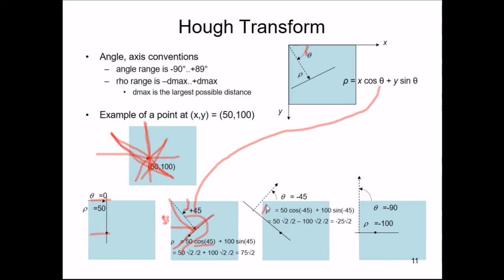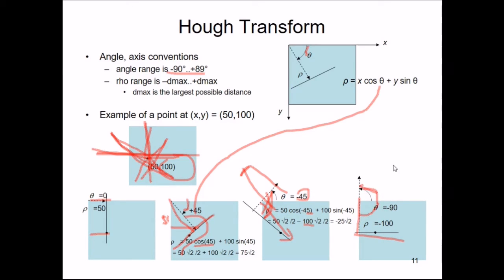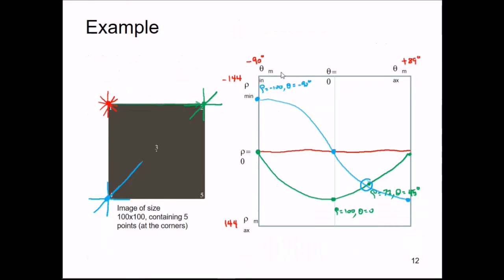For a line through (50, 100) parallel to the X axis, ρ = -100 and θ = -90°, because the direction is anticlockwise. We can change directions rather than exceeding the defined range. For a 100×100 image, the largest distance is √(100² + 100²) = 100√2 ≈ 144, so ρ_min = -144 and ρ_max = 144, and θ ranges from -90° to +89°.